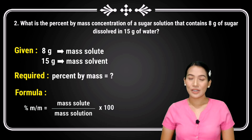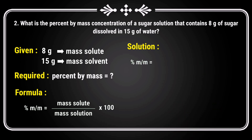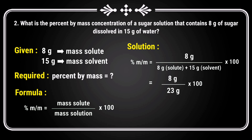What is asked is the percent by mass. Now, we substitute all the values. Percent by mass equals 8 grams over (8 grams mass solute plus 15 grams mass solvent) times 100. Why did we add 8 grams and 15 grams? Because we need to get the mass of solution. So that's 8 grams over 23 grams times 100. 8 divided by 23 is 0.347 times 100, which equals 34.78%.